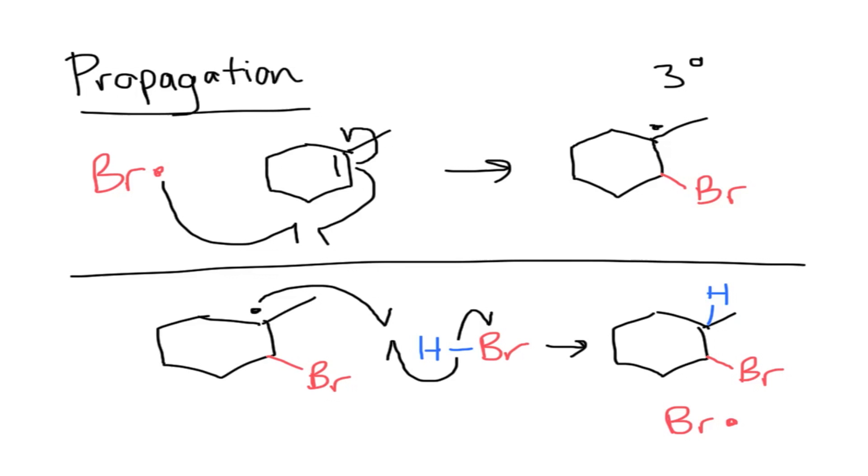If we attach the bromine to the bottom one, it'll make a tertiary radical which is more stable. And that is what forms.